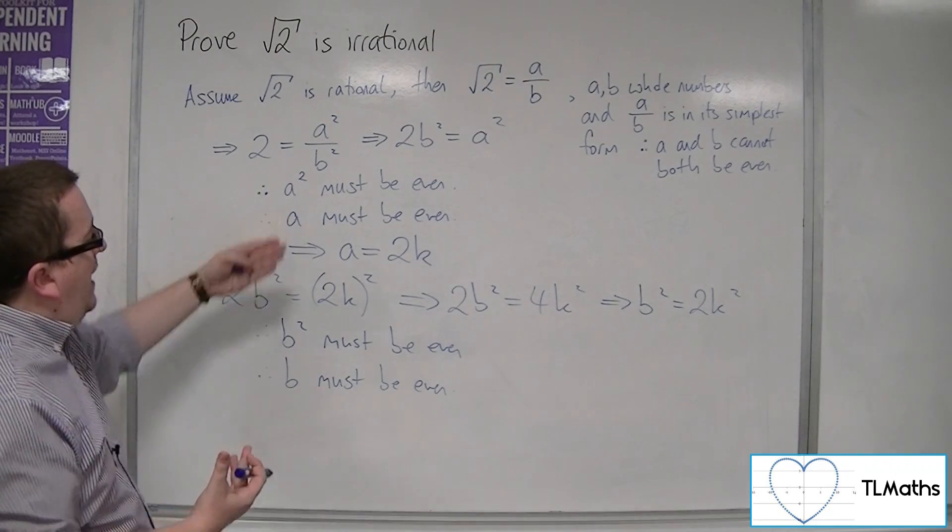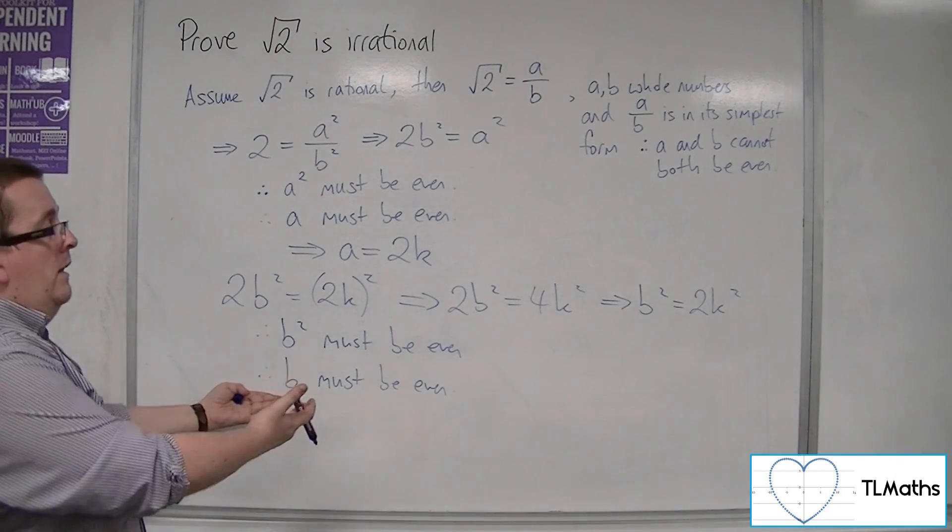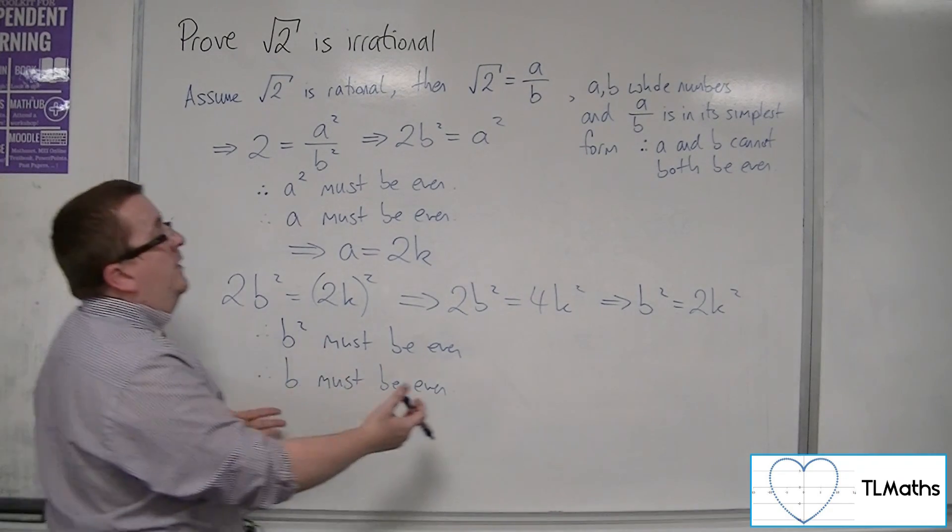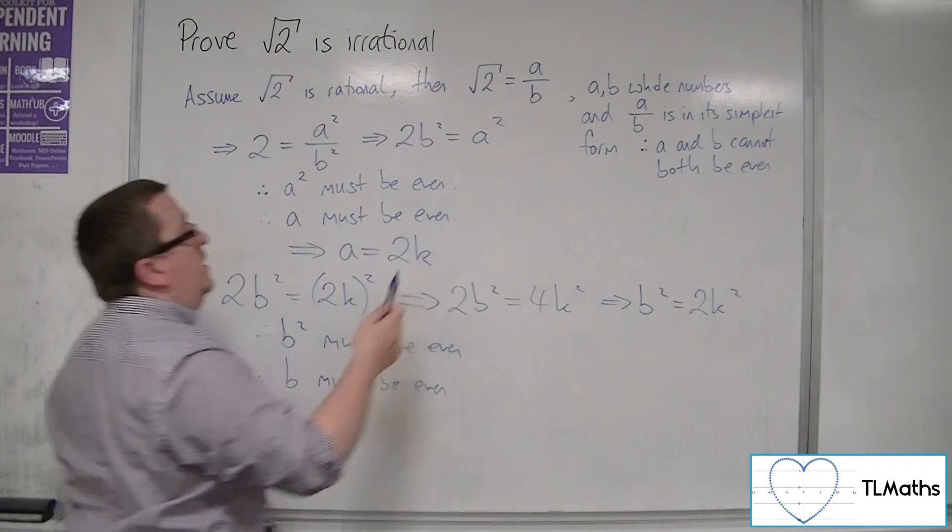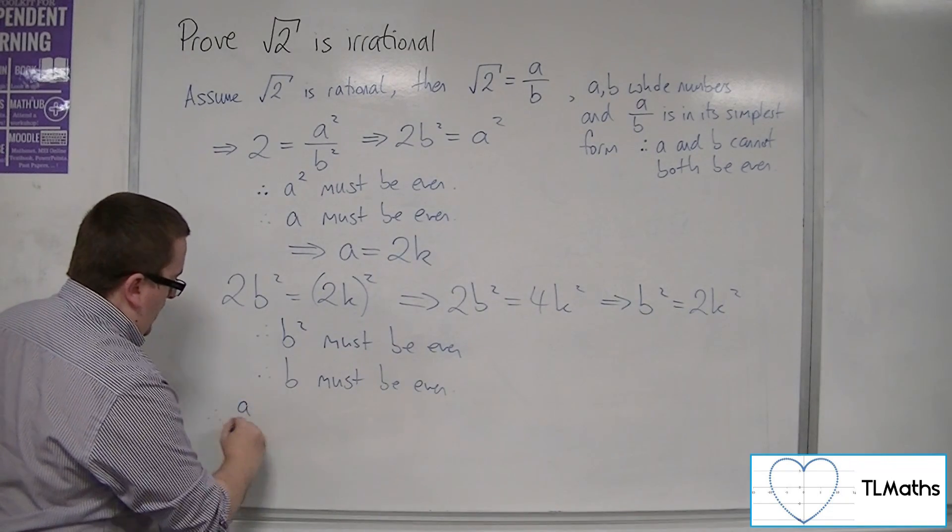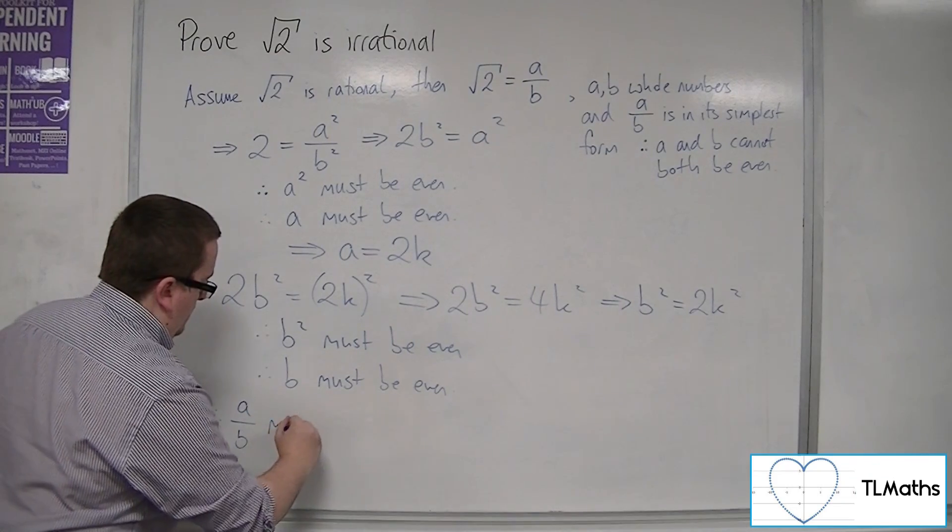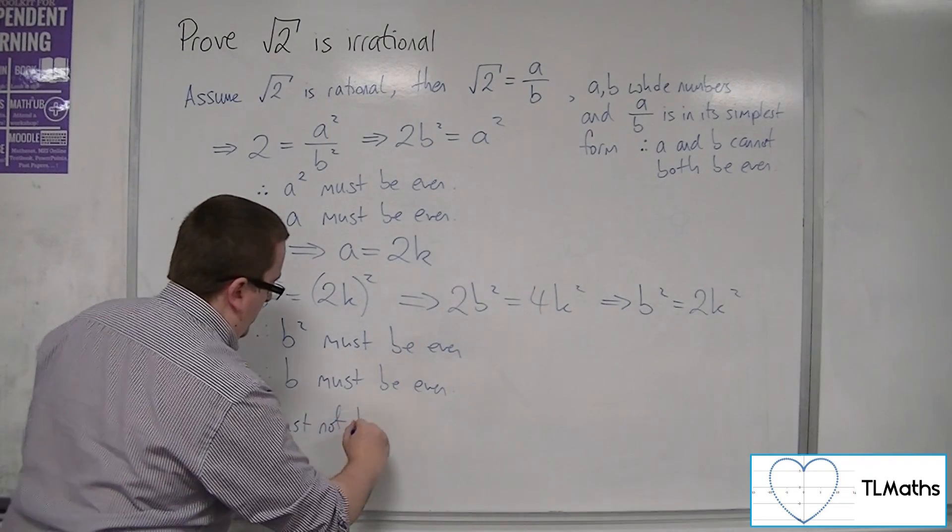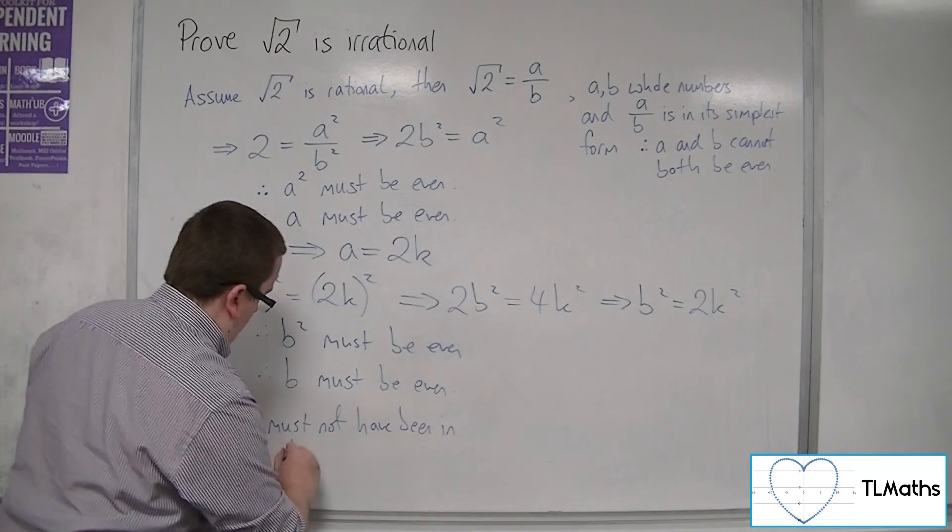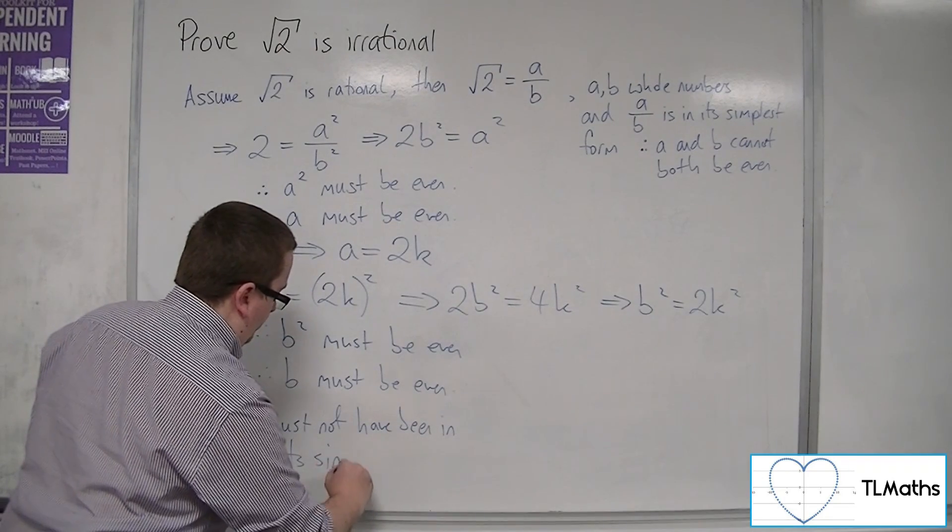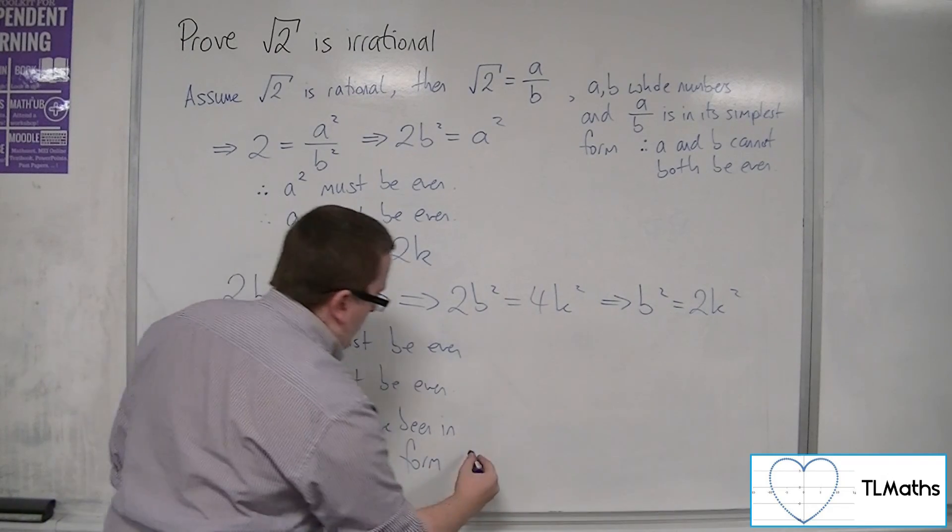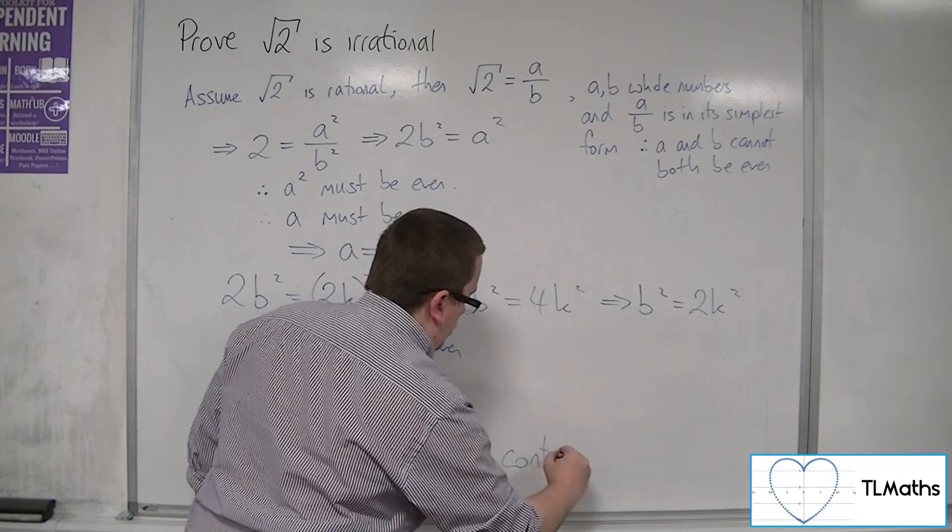So because a and b here have been shown to be even, that means that a over b was not in its simplest form. So a over b must not have been in its simplest form. And that is where we get the contradiction.